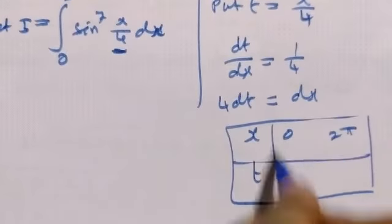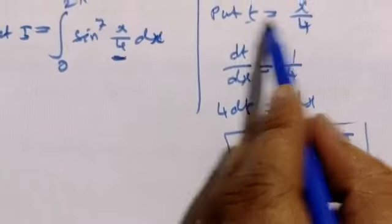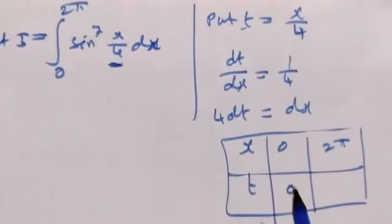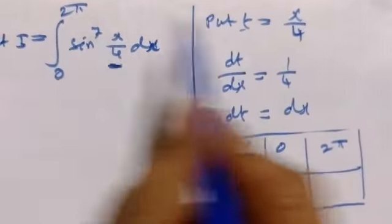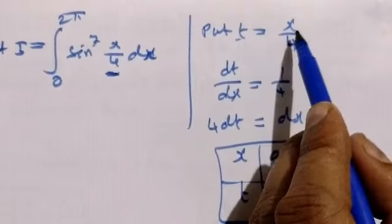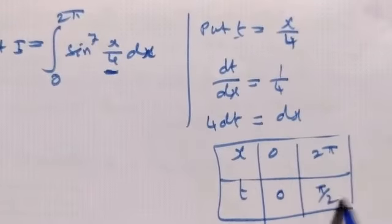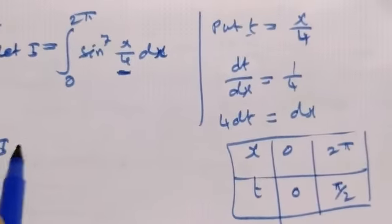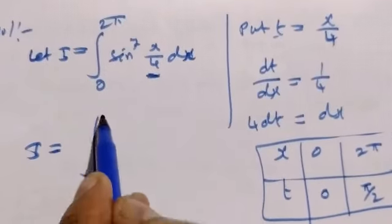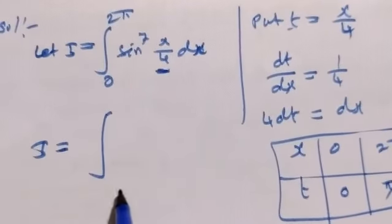Now change the limits. When x equals 0, t equals 0 by 4, which is 0. When x equals 2π, then t equals 2π by 4, that is π by 2.